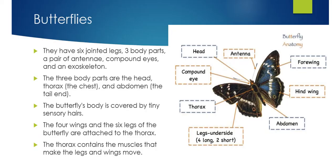A really quick overview of just what the body of a butterfly is, so you can see the change from a caterpillar to a butterfly. Butterflies have six legs, they have three different body parts, a pair of antennae, compound eyes, and an exoskeleton. Remember that an exoskeleton is just having the skeleton on the outside of their body.